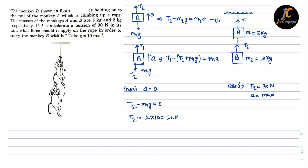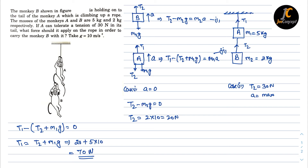From equation two with acceleration zero: T1 equals T2 plus M1g. T2 is 20 newtons and M1g is 5 times 10, so T1 equals 70 newtons. This is the minimum tension which monkey A must apply on the rope to just hold the position of both A and B.